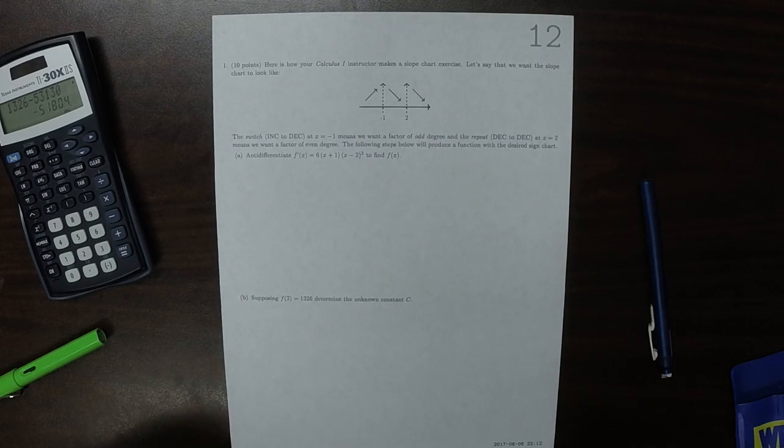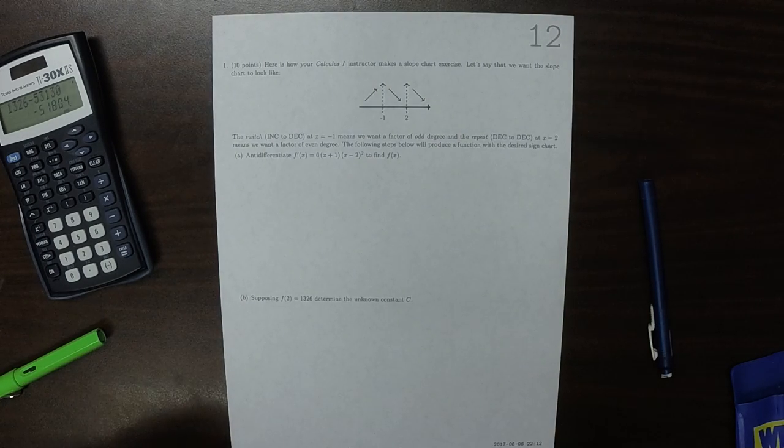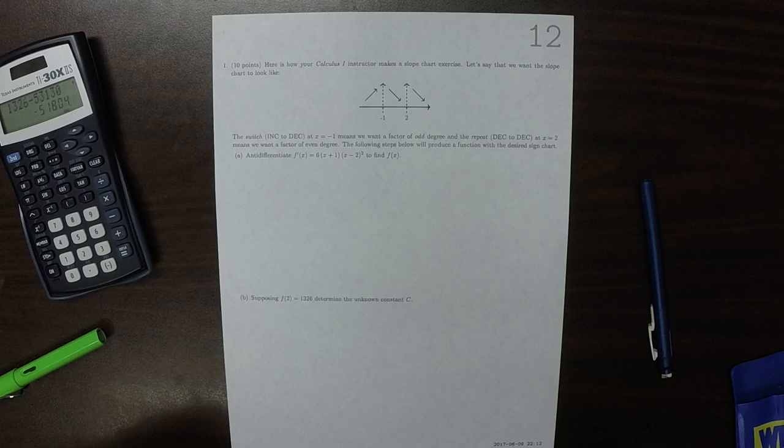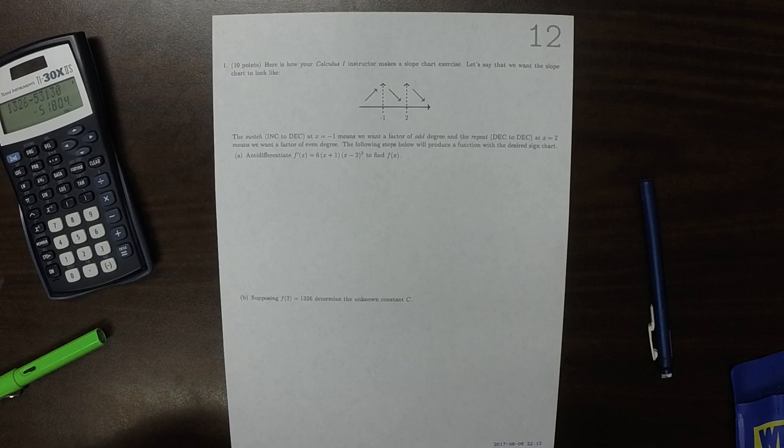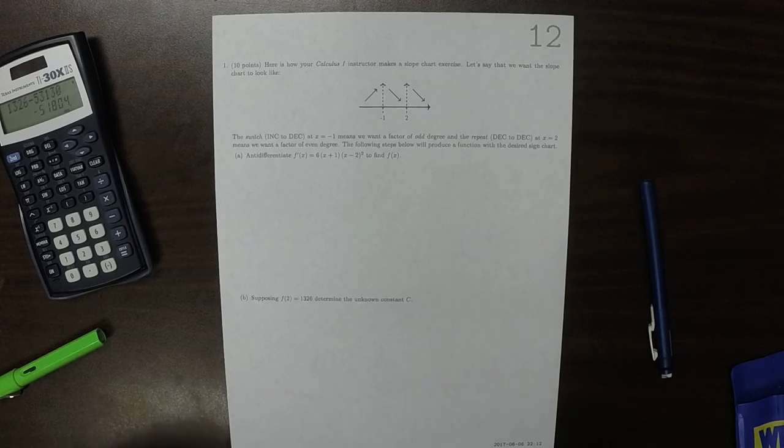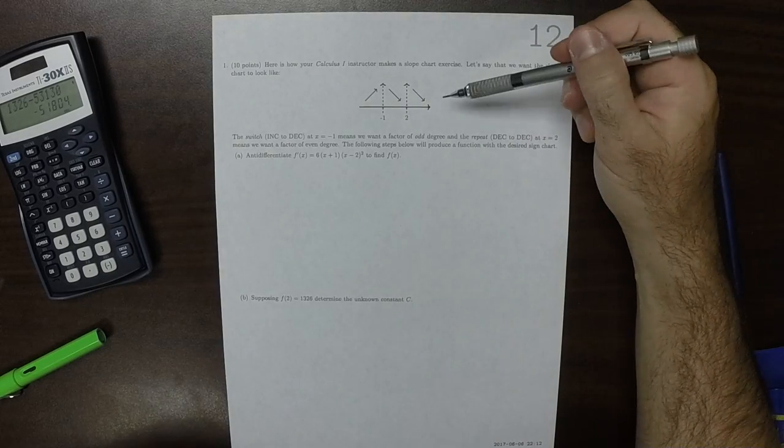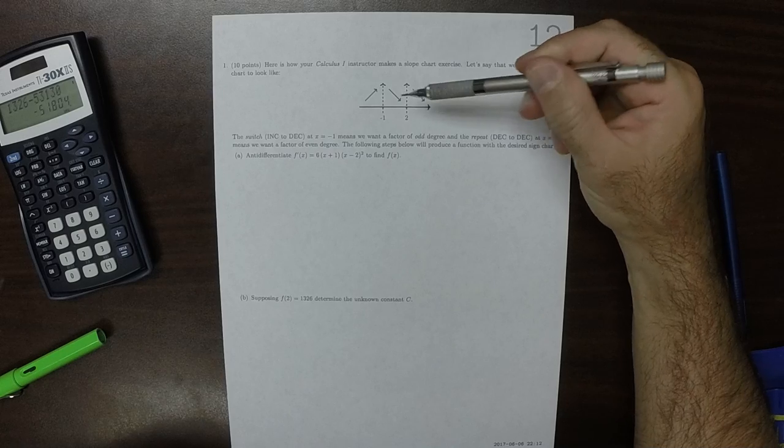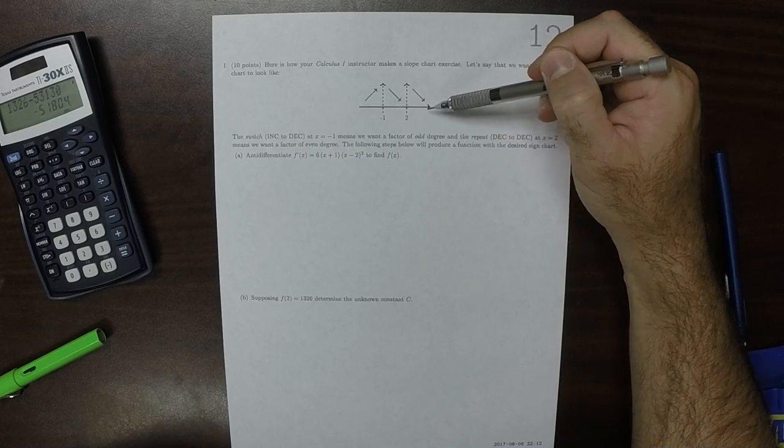This is the solution to Written Homework 12. An interesting question. So it's saying we want to make a function whose slope chart looks like this: increasing, then decreasing, then decreasing some more.